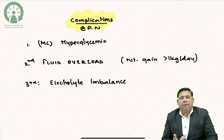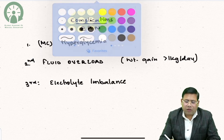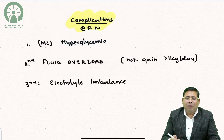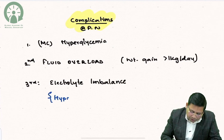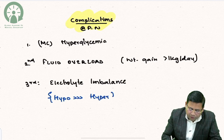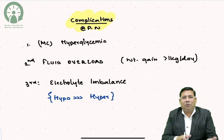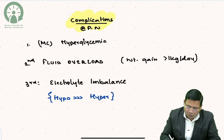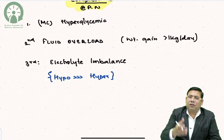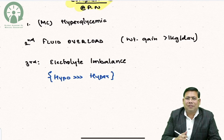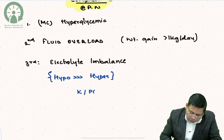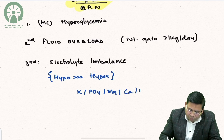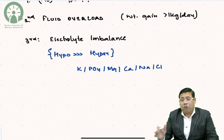The third complication is electrolyte imbalance. Both hypo and hyper states can occur, but hypo is more common due to the dilutional effect of adding volume. In addition, insulin-mediated potassium influx contributes to hypokalemia. The electrolyte imbalances seen include hypokalemia, hypophosphatemia, hypomagnesemia, hypocalcemia, hyponatremia, and hypochloremia, though hyperelectrolyte states can also occur.